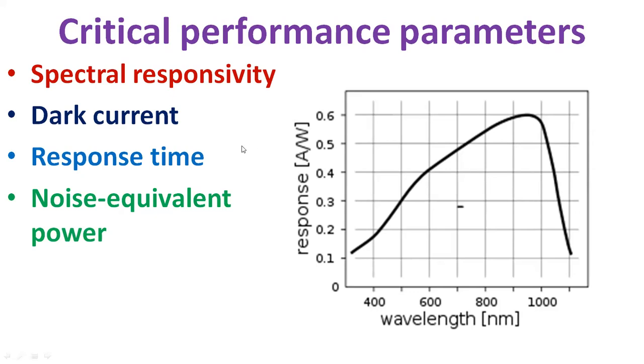Noise equivalent power is the minimum input optical power to generate photocurrent equal to the RMS noise current in a one hertz bandwidth. Noise equivalent power is essentially the minimum detectable power. When a photodiode is used in an optical communication system, all these parameters contribute to the sensitivity of the optical receiver, which is the minimum input power required for the receiver to achieve a specified bit error rate.